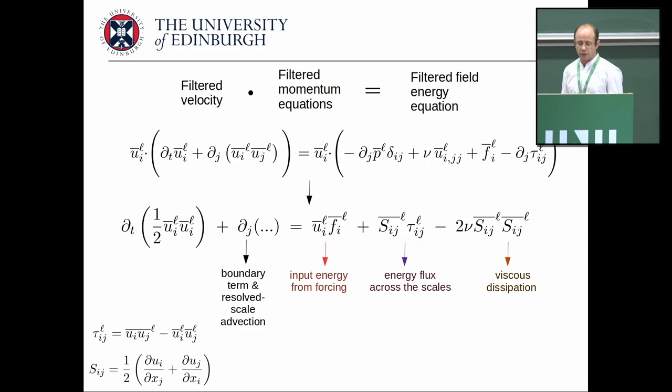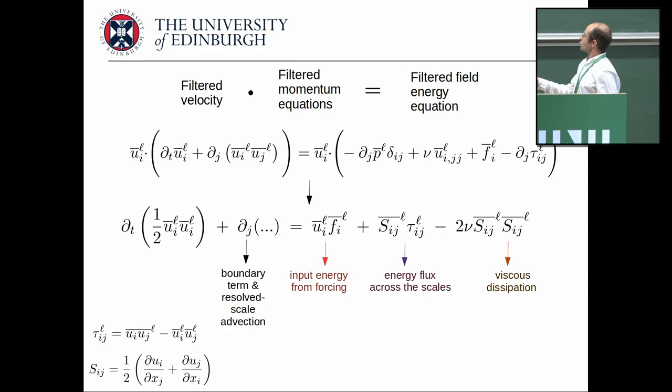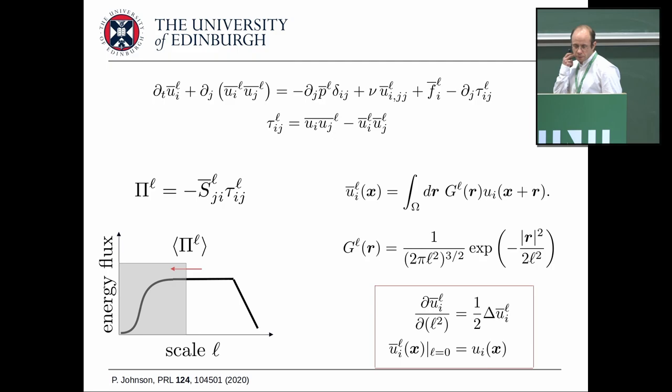Writing down an equation for the energy content of the filtered (large-scale) field, there is a term I'll ignore — in homogeneous turbulence it vanishes. Then there's energy input from forcing, the energy flux across scales given by the strain-rate tensor contracted with the SGS stresses — which is what we'll be discussing — and viscous dissipation, which I won't consider further. Now I come to the important point about the filter choice.